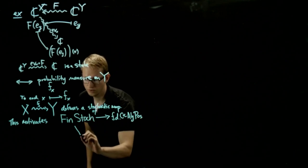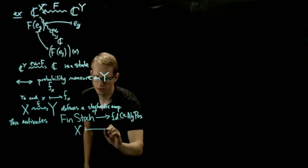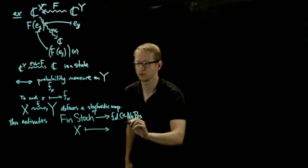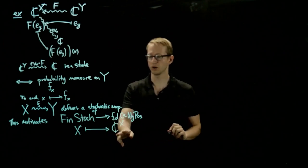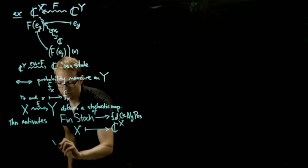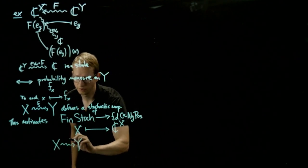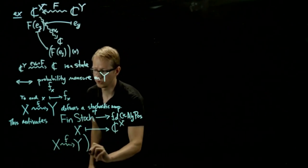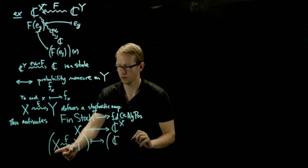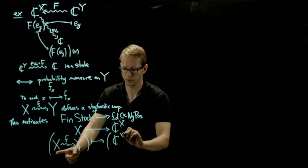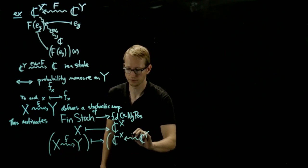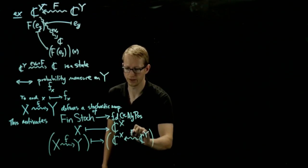So what is this functor? If you give me a finite set X, I need to construct a C*-algebra — that's the C*-algebra of functions on X. But now, if you give me a stochastic map from X to Y, I have to produce a map going in the opposite direction, from C(Y) to C(X). I'll call this capital F for now.